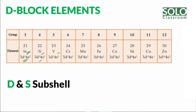This is called the subshell electronic configuration. To find the group number, you add the D and S electrons together. For chromium it is 5 plus 1 equals 6. For cobalt it is 7 plus 2 equals 9. For zinc it is 10 plus 2 equals 12.